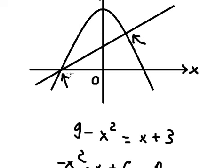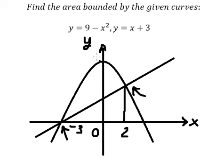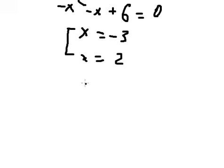So this intersection is at about negative 3 and this one is at about 2. The region we want to find is this one, because we have two bounds in here. Now the next step is the area.